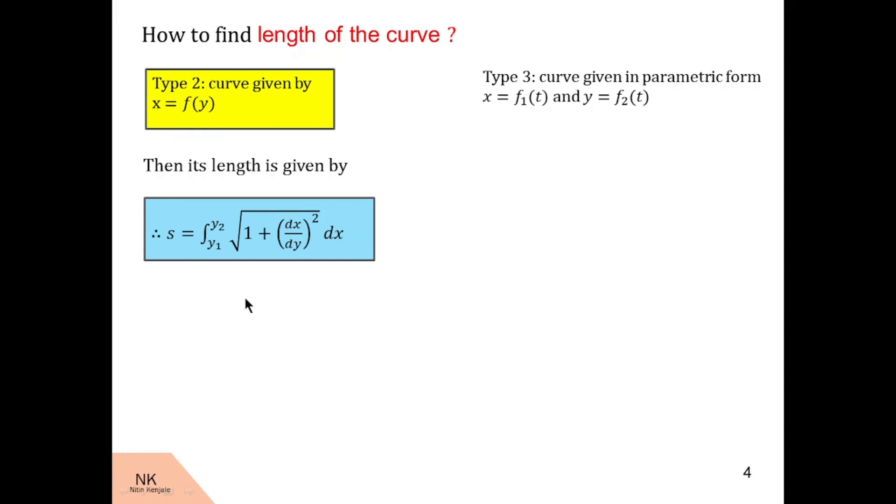Similarly, if equations of the curve are given in parametric form, say x = f₁(t) and y = f₂(t), then length of the curve is given by the integral of √((dx/dt)² + (dy/dt)²) dt over the limit t₁ to t₂.